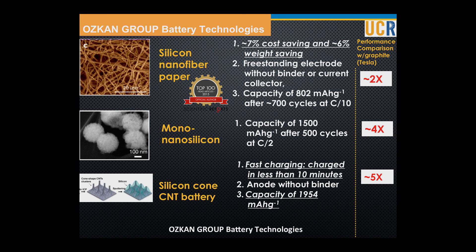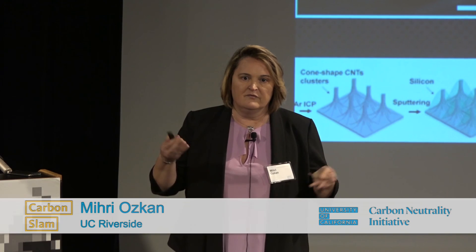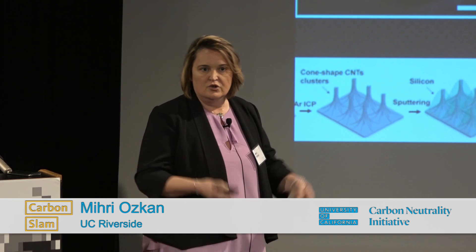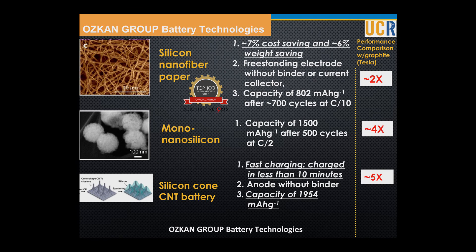I want to show a couple of the technologies we've developed in our group. One is called silicon nanofiber, aimed at reducing cost. By removing some unwanted materials in the battery system, we were able to save cost by 7%. Weight is also important — for unmanned vehicles trying to fly, or even in cars, you always want lightweight batteries. With this technology, we reduced weight by about 6%. This technology received a Top 100 seal by Nature Publisher, and our performance compared to Tesla's graphite anode is about two times better.